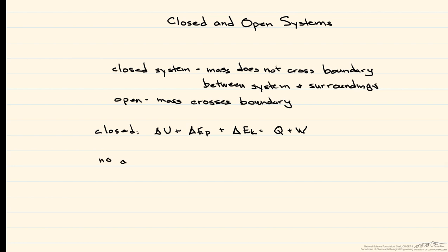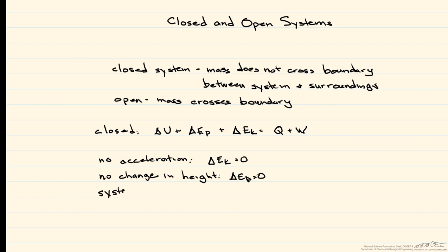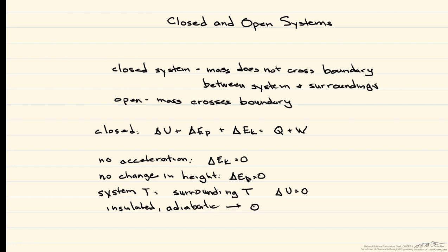If there is no acceleration, then delta E sub K, the kinetic energy, is going to be equal to zero. If there's no change in height, then the change in potential energy is going to be equal to zero. If the system's temperature is equal to the temperature of the surroundings, delta U is going to be equal to zero, since internal energy is a function of temperature. And if the system is insulated — another term we use is adiabatic — then Q equals zero.